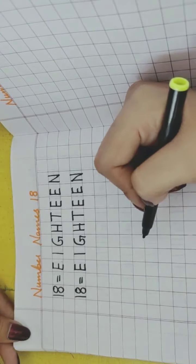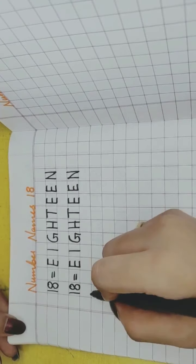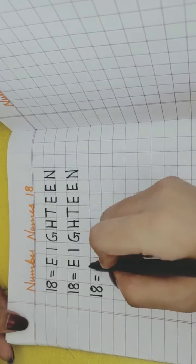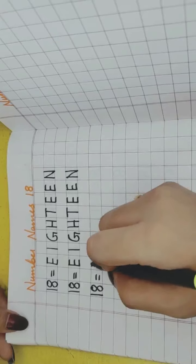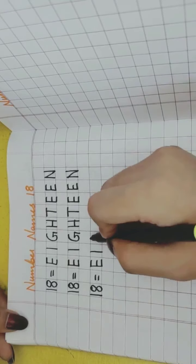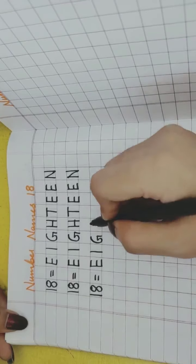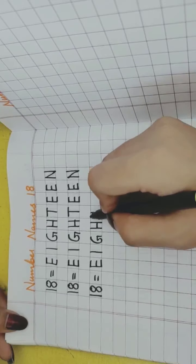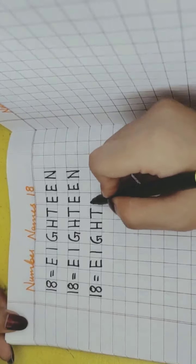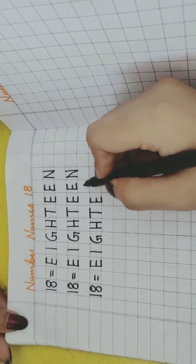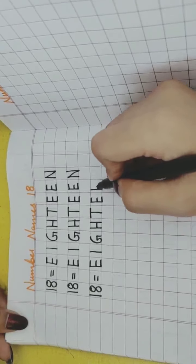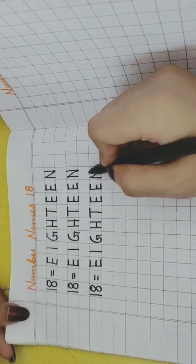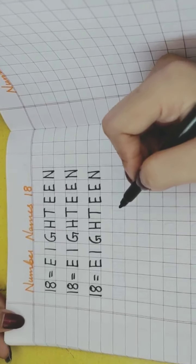Can you see the spelling of 18? Once again, repeat again with me. One, eight, 18. E, I, G, H, T, E, E, N. Very good.